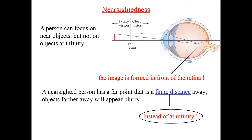So how do we fix this issue? Nearsightedness means that there is a far point — some distance that your eye can see clearly — but beyond that everything is out of focus. In order to correct this, we want a lens that takes a distant object and converts it into a virtual image that forms at the far point of the person's vision.